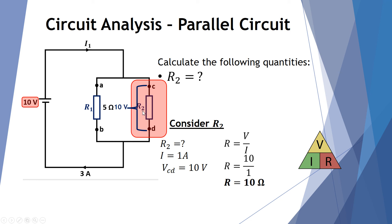Let's now look at resistance R2. R is the unknown, the current we just worked out was 1 amp, and we know the voltage between points C and D equals the supply voltage — this branch also has 10 volts. Using R equals V over I, the voltage is 10 and the current is 1 amp — 10 divided by 1 gives us 10 ohms for resistance R2.